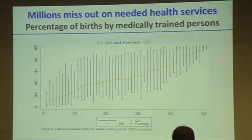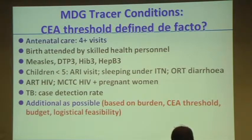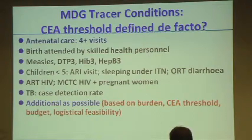How do we further qualify other services? These were the MDG tracer conditions. We don't start from zero — we have a history from the MDGs. I would put all of those in, and then add additional services as possible, based on burden of disease and the cost-effectiveness threshold implied by this. Any intervention with a cost-effectiveness ratio below the threshold should be included in the package, especially if there is a major burden, subject to budget and logistical feasibility.